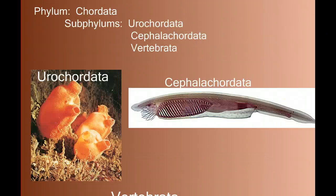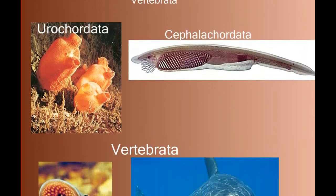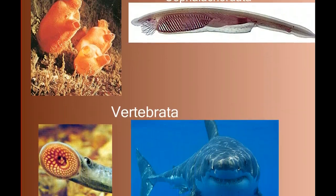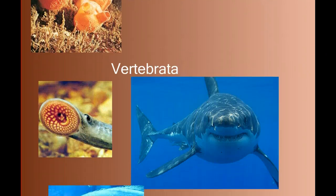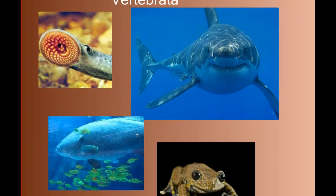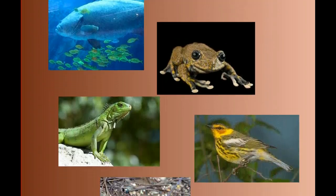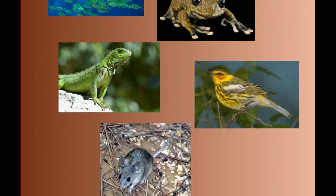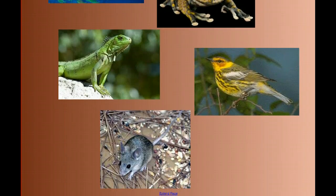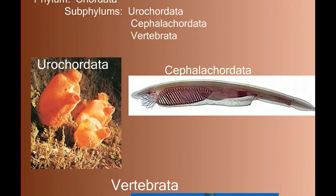As we move through the phylum Chordata, we're going to focus on certain anatomical and adaptive changes that allowed for animals to make the transitions that we see — similar to how we went through plant diversity and evolution. Specifically, we're going to look at changes in gas exchange systems, circulatory systems, skeletal systems, nervous systems, and reproductive systems, and relate each to lifestyle and habitat. We'll start by taking a closer look at the subphyla within the chordates: the Urochordata, the Cephalochordata, and the Vertebrata, and what makes each unique.